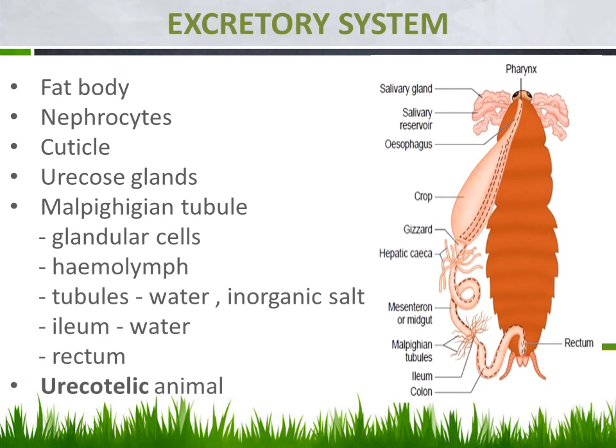This may also be asked as a question: which is the nitrogenous waste of cockroach? The answer is uric acid — not urea or ammonia. That is the excretory system of cockroach. Hope we can cover it up here, and let us go on to a few assignments regarding today's portion.